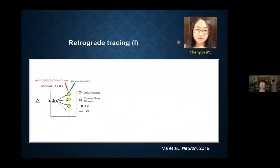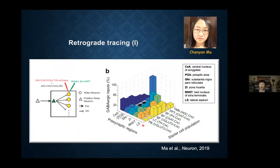This was done by postdoc Chen Yan Ma in my lab. She targeted a whole bunch of wake-promoting neurons — many populations including histaminergic, cholinergic, glutamatergic, noradrenergic, and GABAergic — looking for brain regions with relatively broad GABAergic innervation of these wake centers. Here's a summary of the first round of screening: these bars indicate the number of rabies-labeled cells seen for each target region.